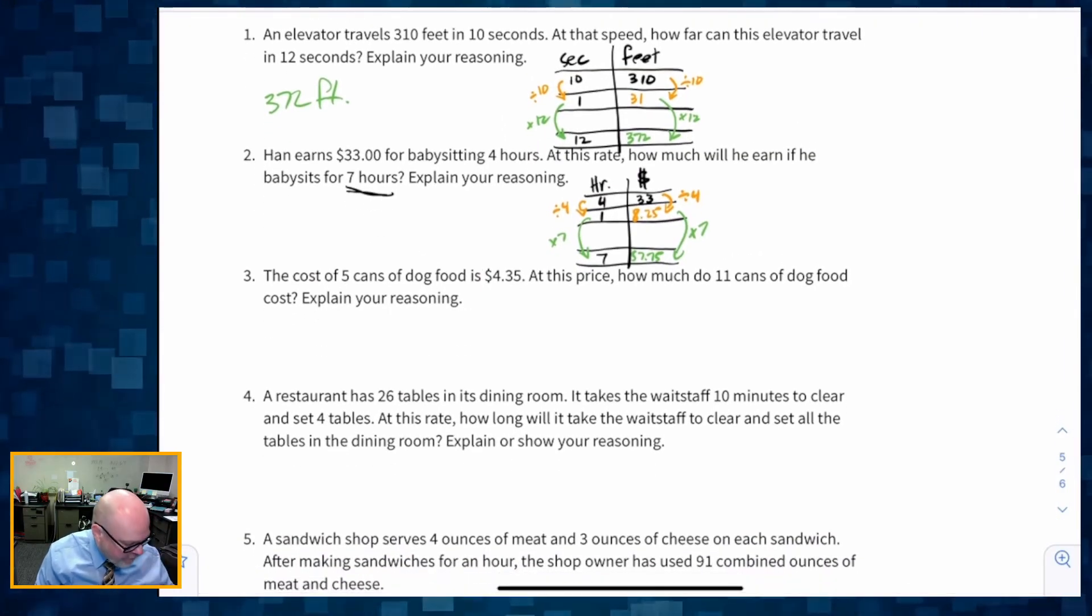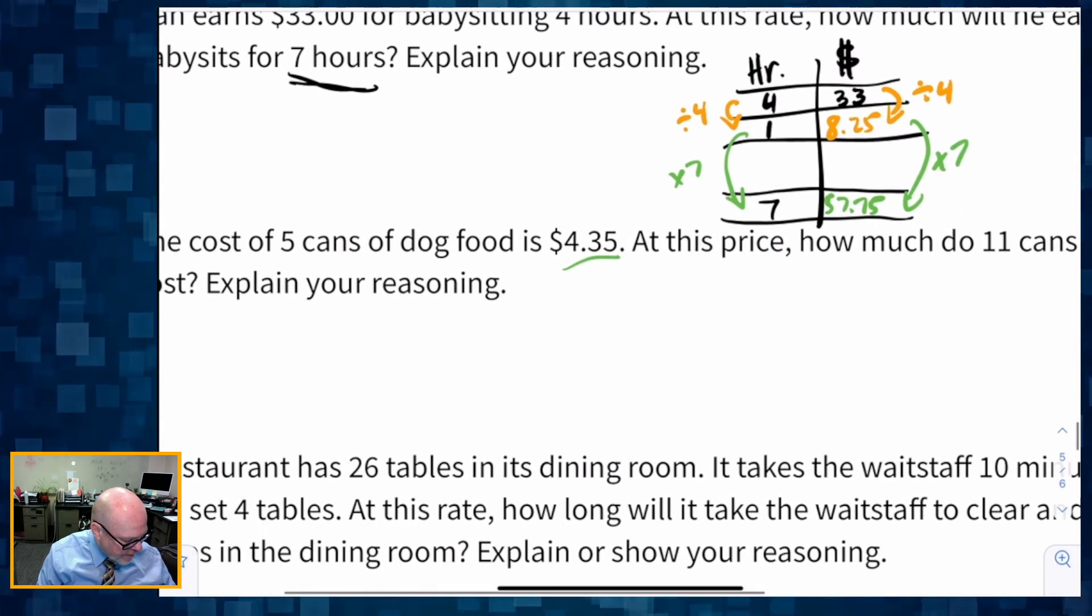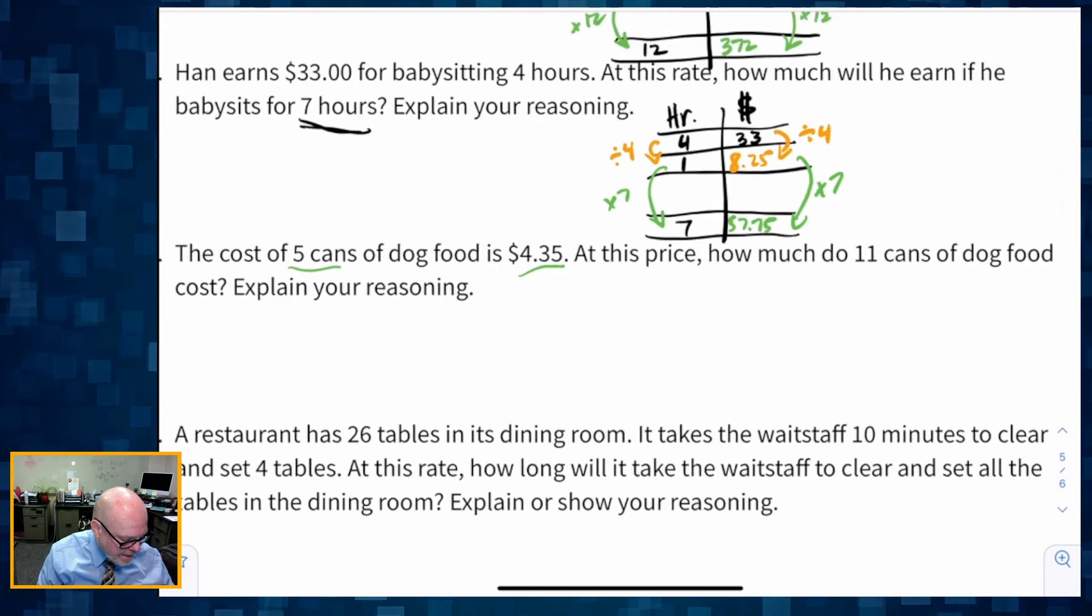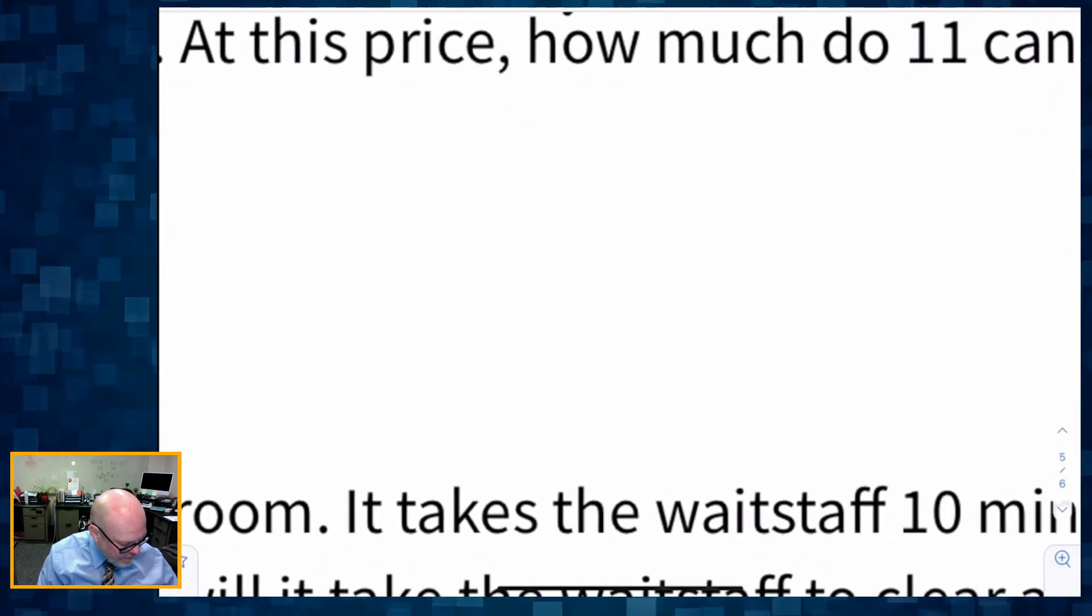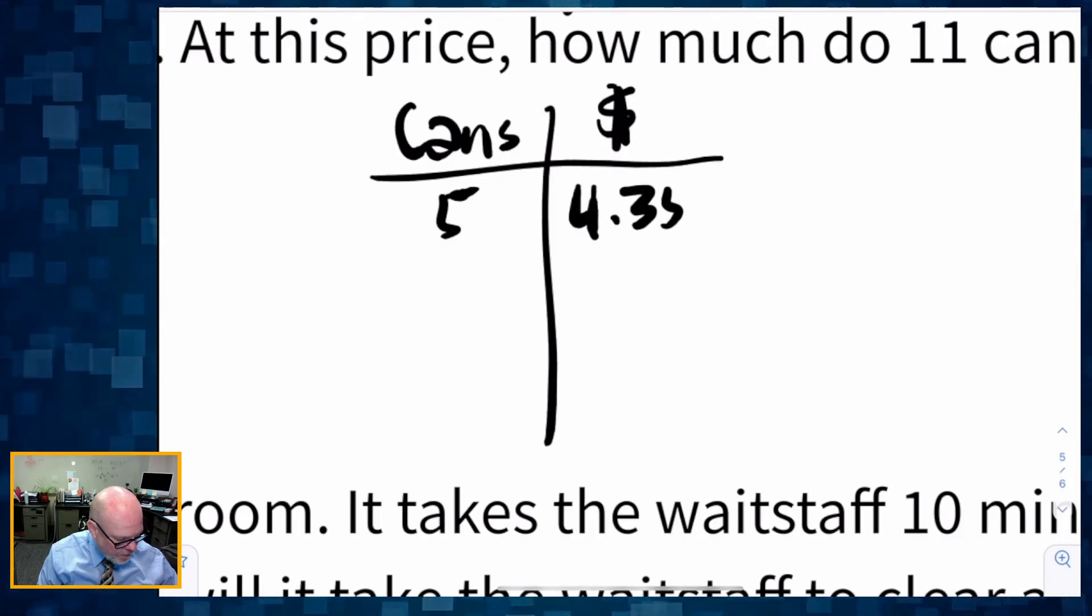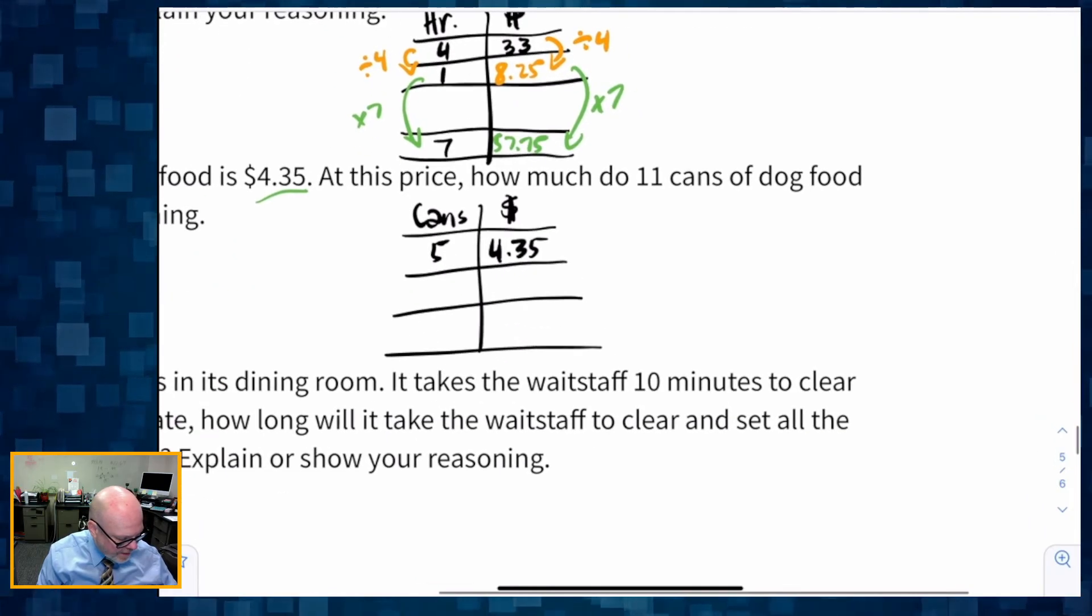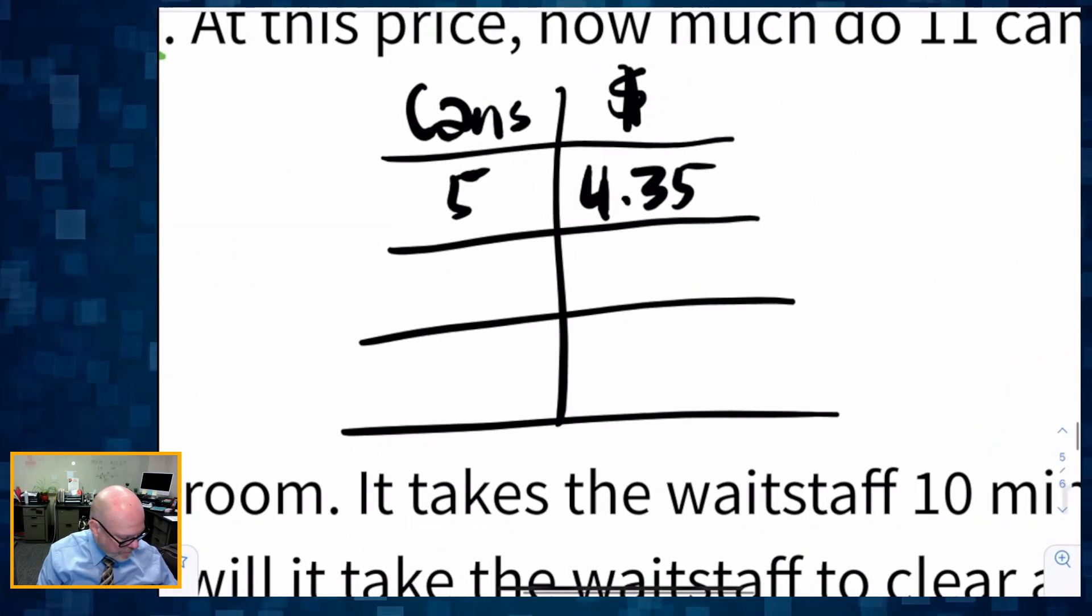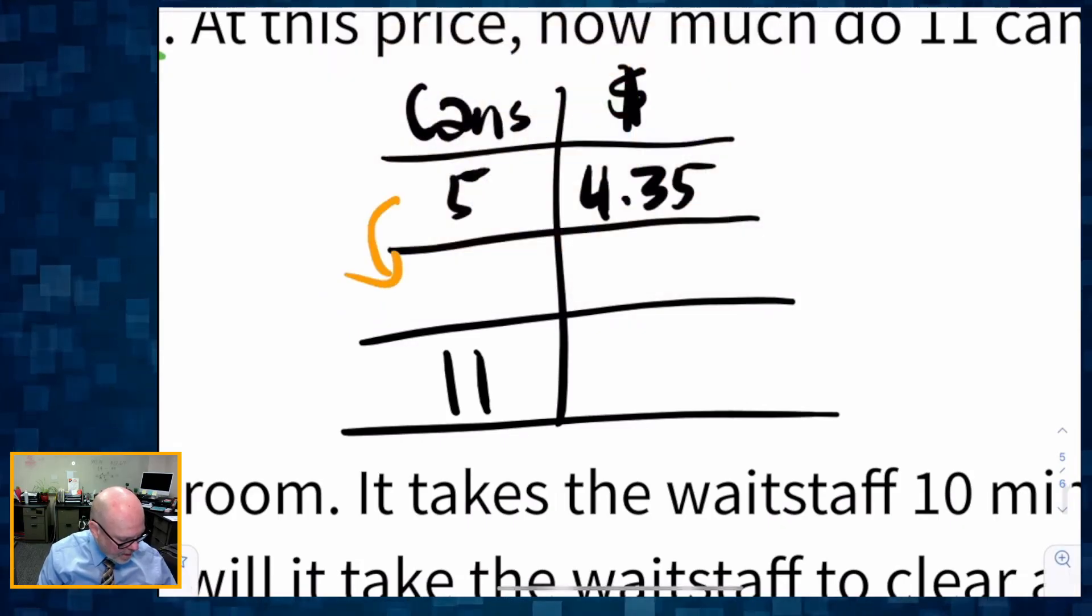The cost of five cans of dog food is $4.35. So five cans is $4.35. At that price, how much do 11 cans cost? So five cans is $4.35. And we want to know how much is 11 cans.